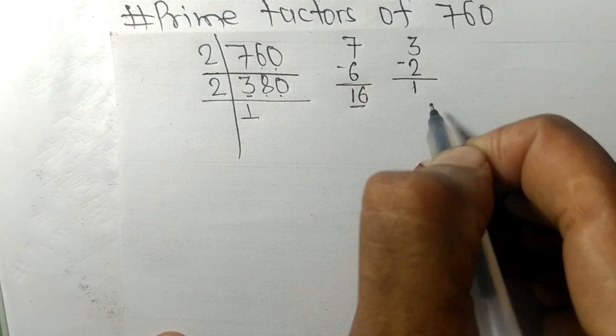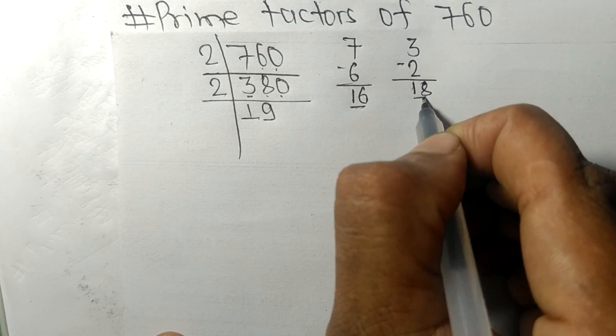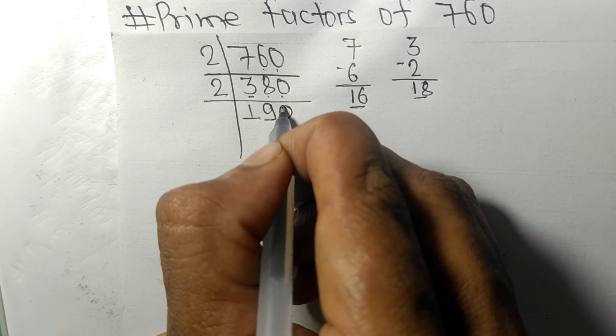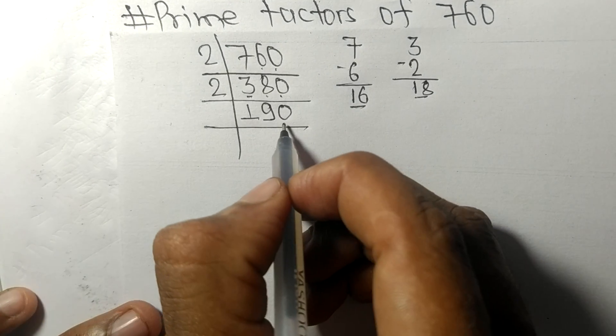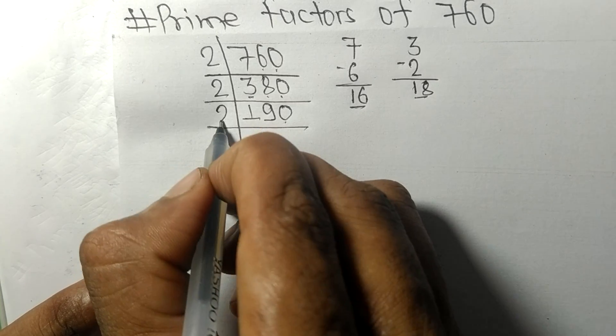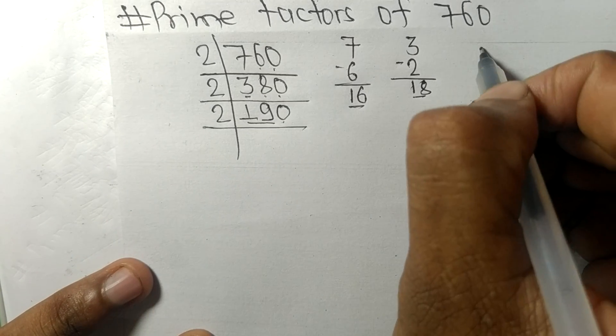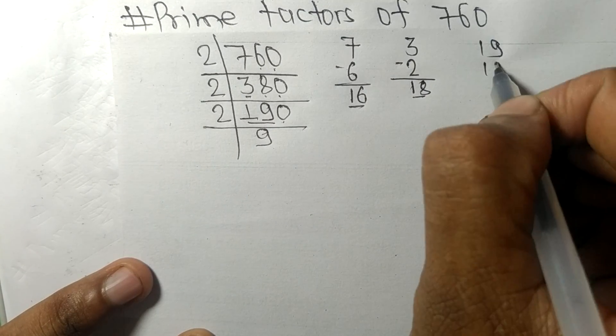And this 8, 18. 2 times 9 means 18, and 2 times 0 means 0. Again it has 0 at the last, so it is divisible by 2. Here we have 19, so 2 times 9 means 18, remainder 1. And 0, 10, so 2 times 5 means 10.